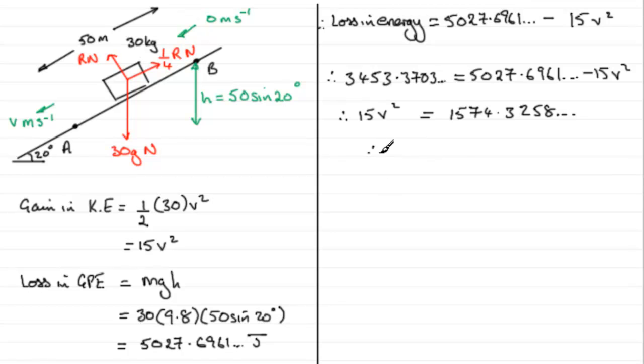then 5027.6961 minus this value here gives us a total value of 1574.3258 and so on. Simply divide through by 15 and you've got v squared equals 104.9550 and so on. Take the square root to both sides and you end up with v equaling 10.244 and so on. Give that to an appropriate degree of accuracy, say one decimal place or three significant figures. Same thing, in the end, 10.2 metres per second to three significant figures.